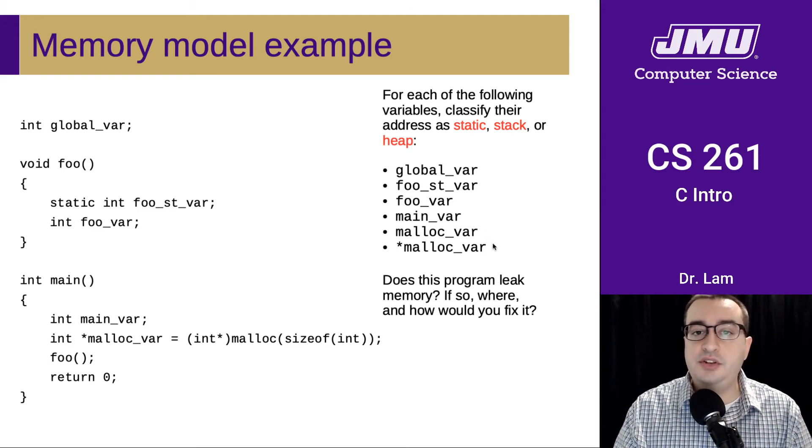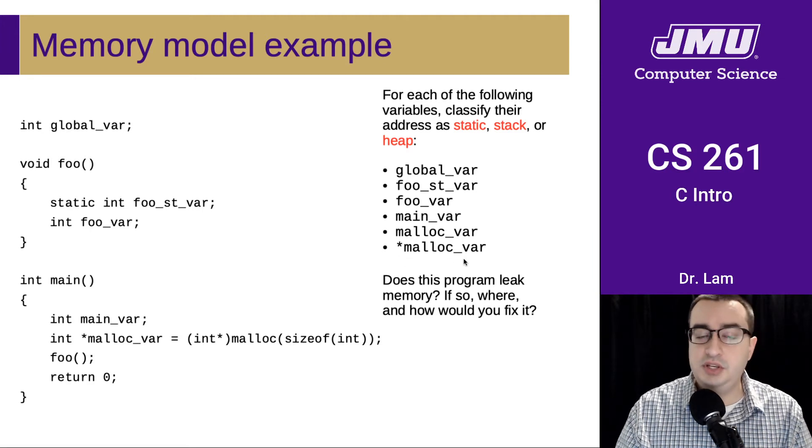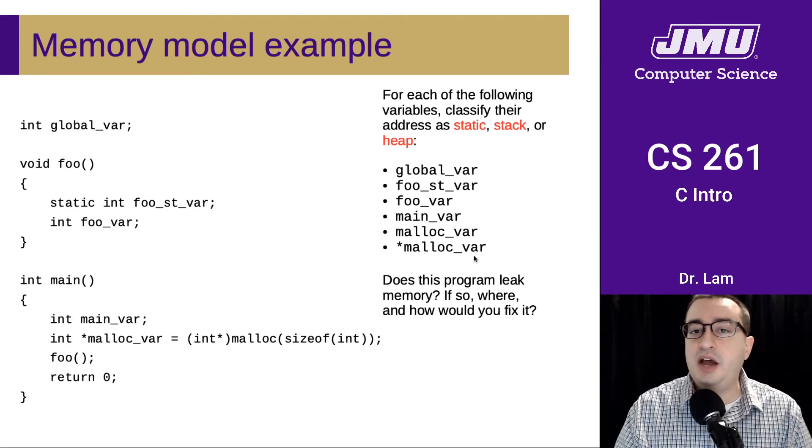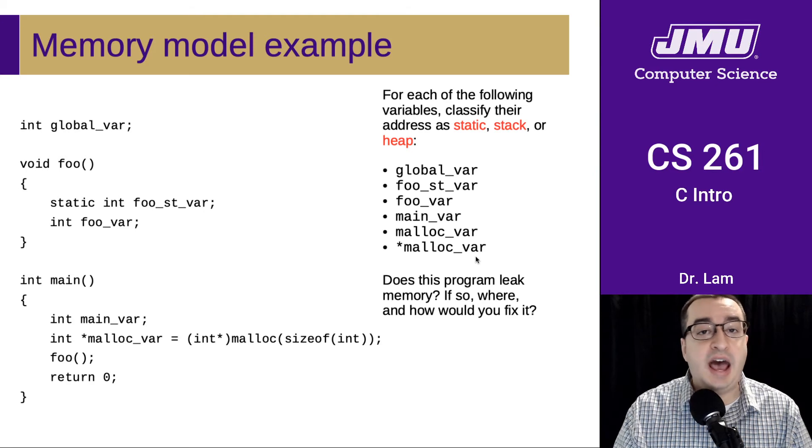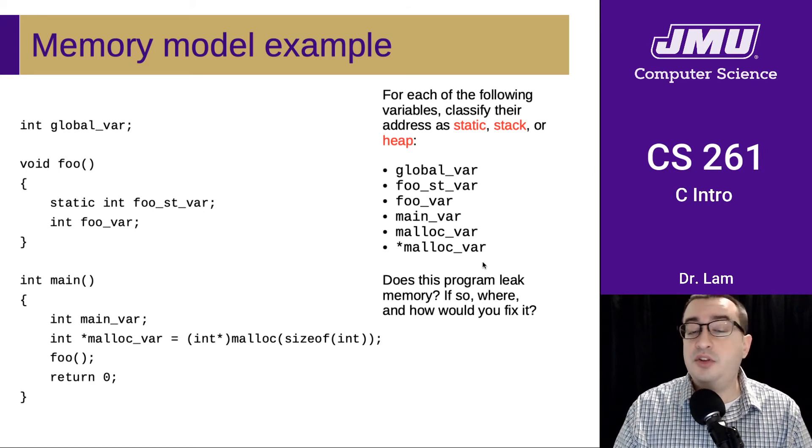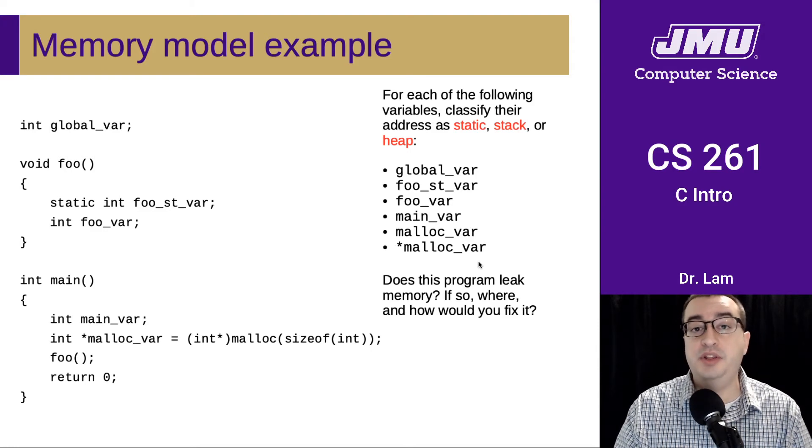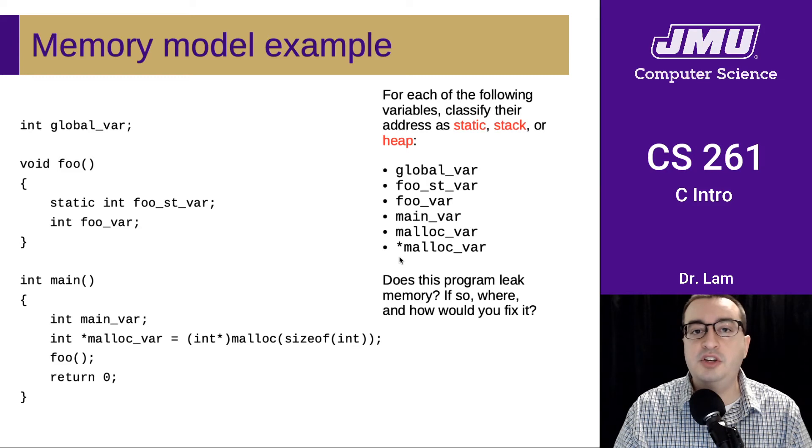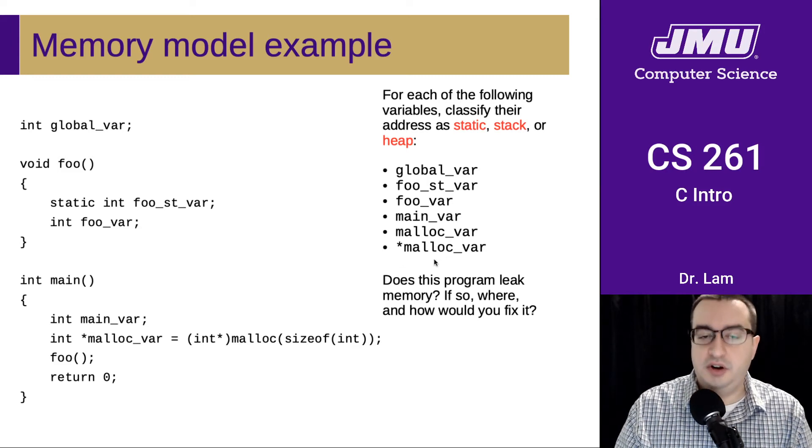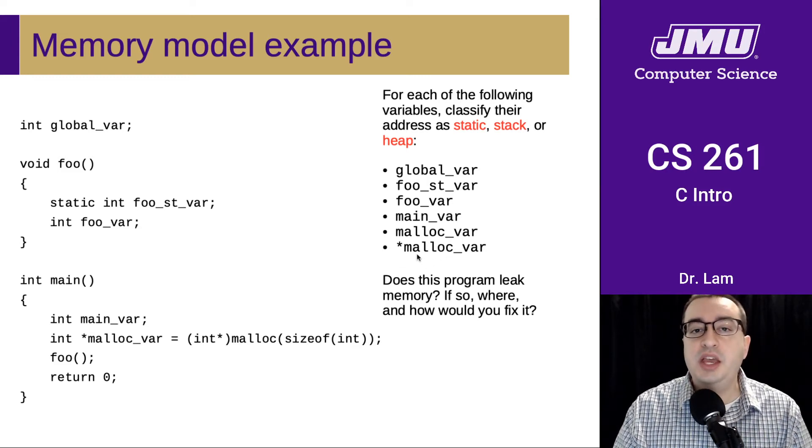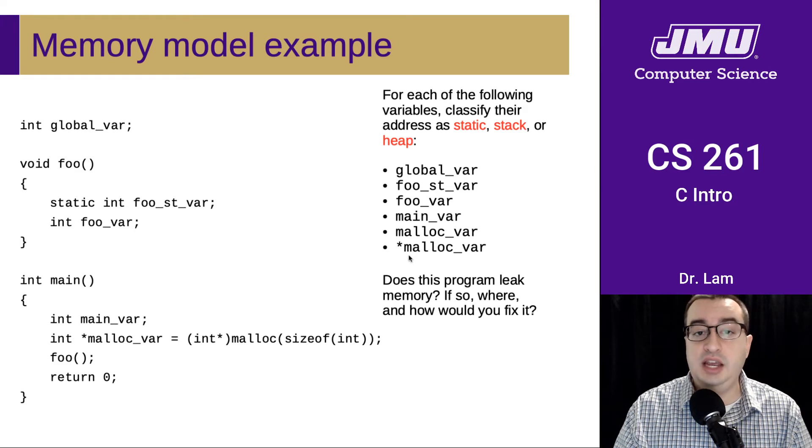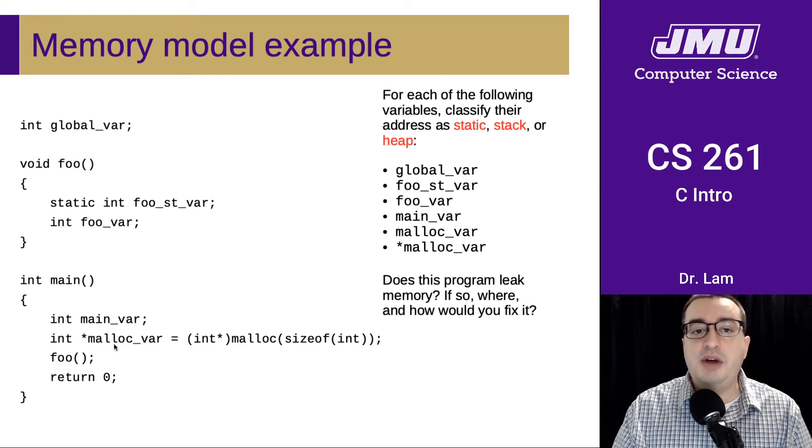Then we get to these last two variables. So malloc_var and then whatever malloc_var is pointing to. And note here that the thing that malloc_var is pointing to may not have a name. So it's certainly possible to have variables and locations in memory that don't have an explicit name. And so here we're kind of giving it an implicit name and we're referring to it as star malloc_var. It's the place that we get to if we follow the pointer contained in this variable called malloc_var. So let's think about malloc_var itself.